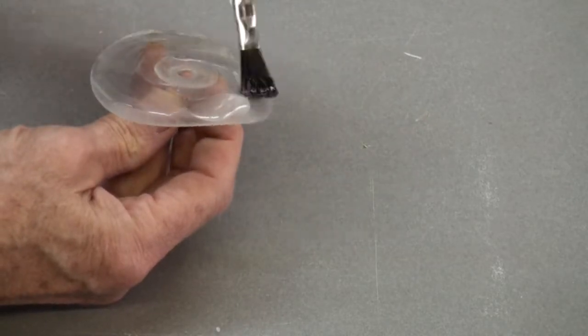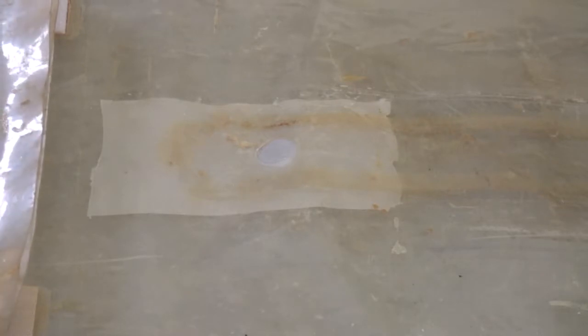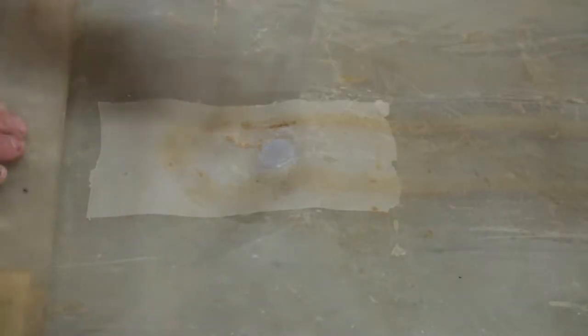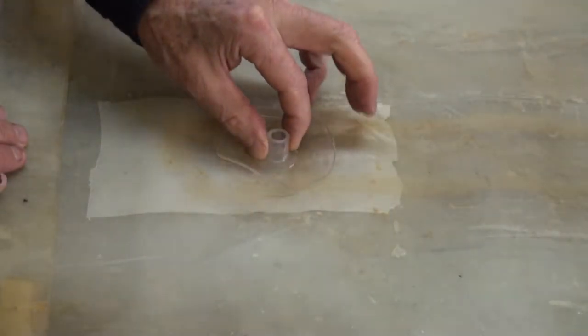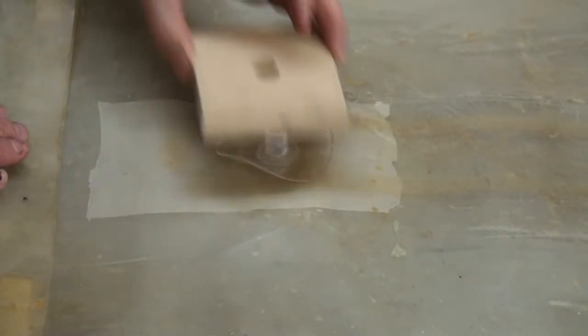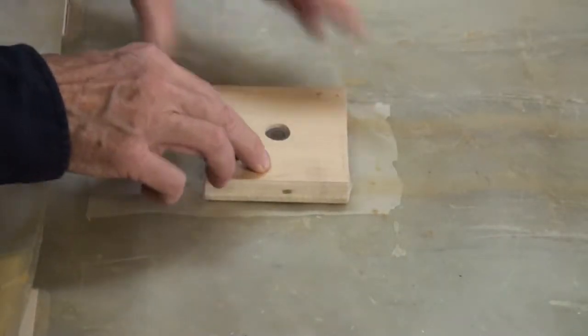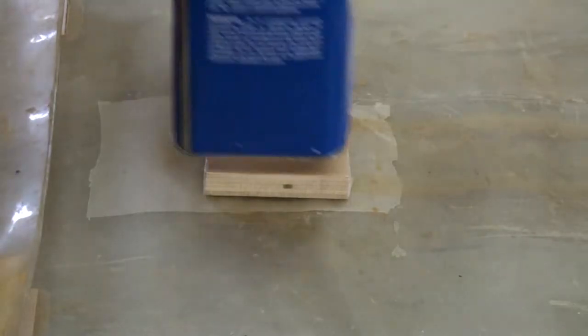Apply the adhesive to the nipple. Next, place a piece of waxed paper on the inside of the bag in case of squeeze out. Apply the glue to the nipple patch and set it over the hole in the bag. Place the block over the nipple and a heavy weight on top of the block. Let this sit overnight.